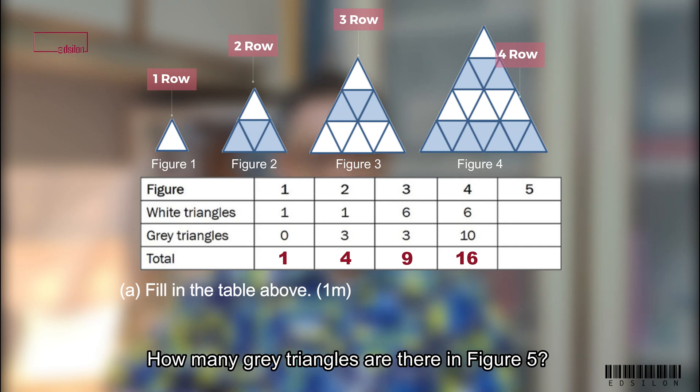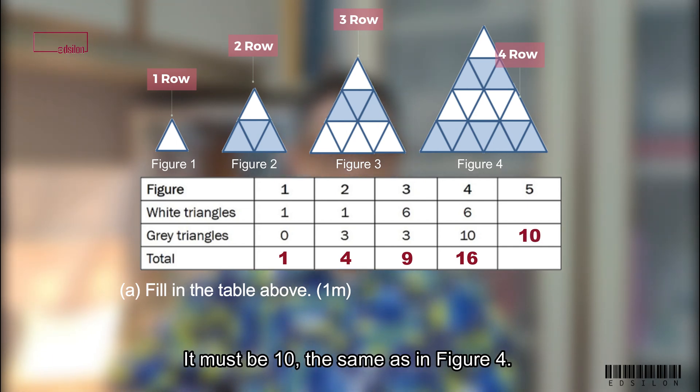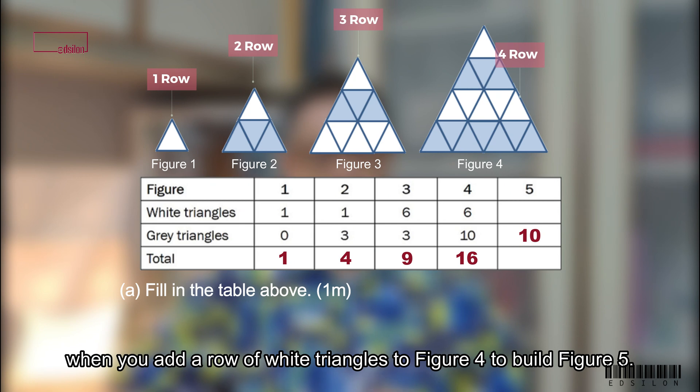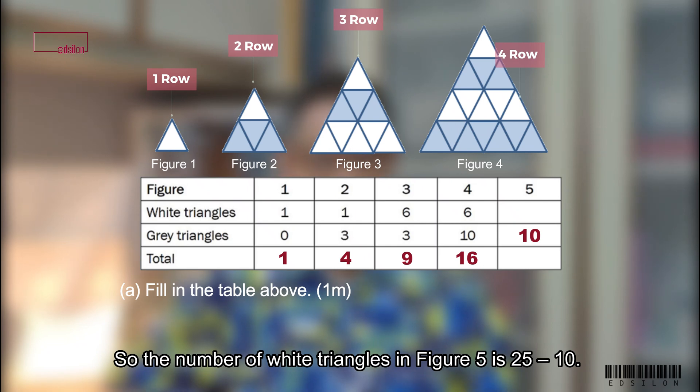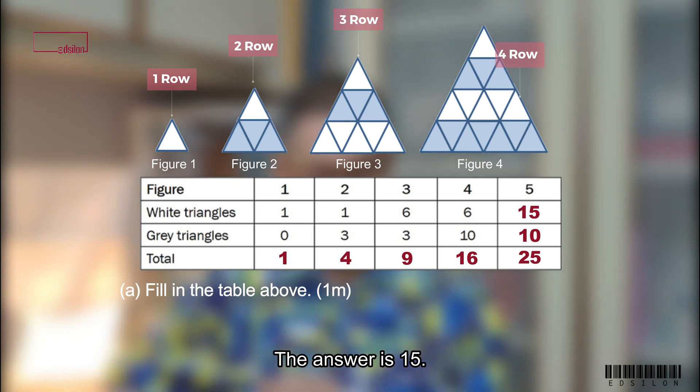How many grey triangles are there in figure 5? It must be 10. The same as in figure 4. Because the number does not change when you add a row of white triangles to figure 4 to build figure 5. So the number of white triangles in figure 5 is 25 minus 10. The answer is 15. So part A is done.